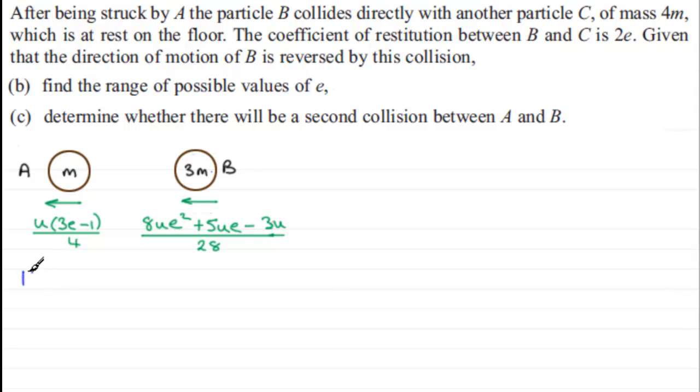And we'll just say that if A and B collide, then we would expect this, so we'll just write it out again. 8u e squared plus 5u e minus 3u all divided by 28 has got to be greater than u times 3e minus 1 over 4.